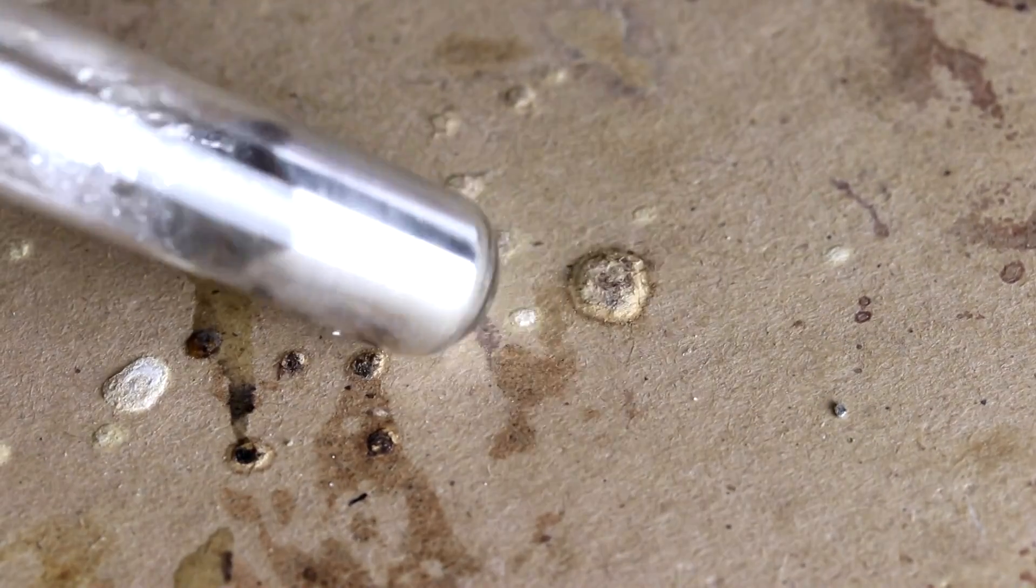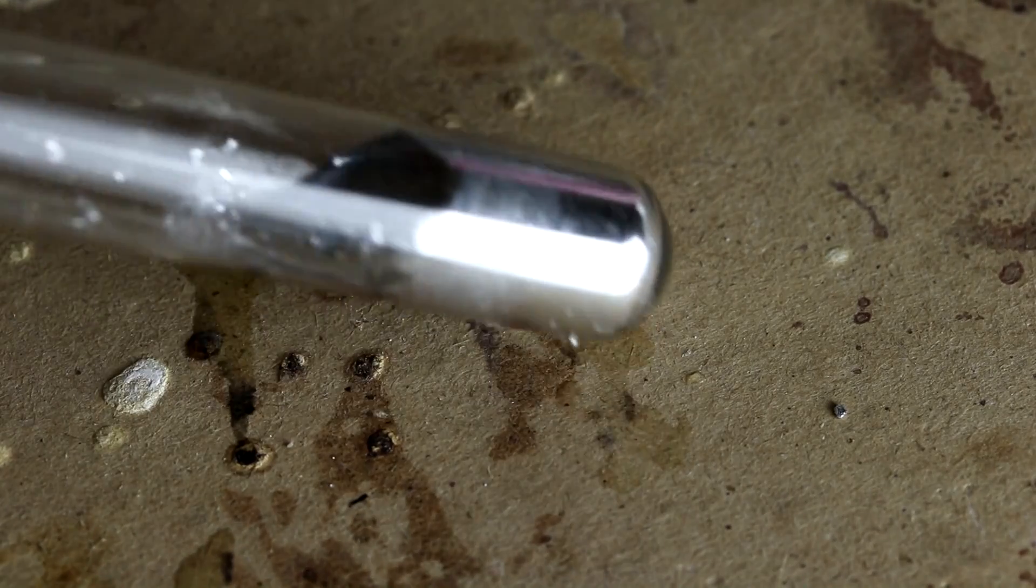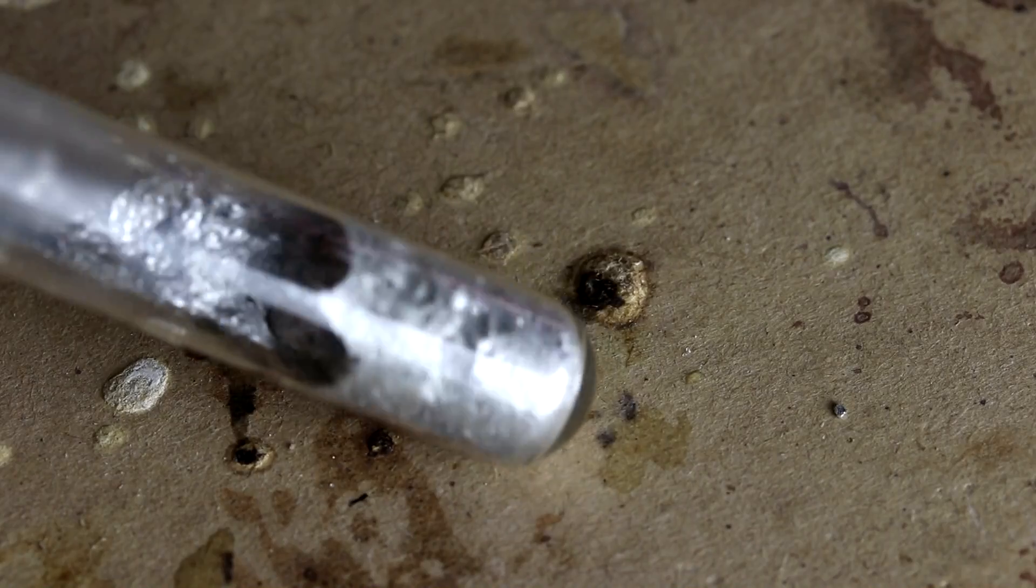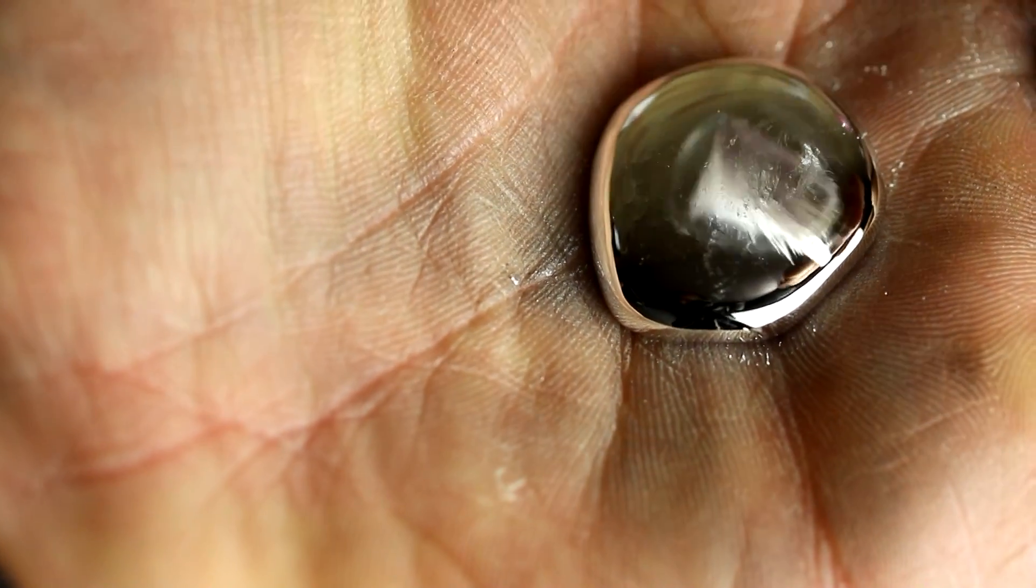So now I've transferred the alloy into a test tube here. There's still some chunks of other metal, tin and indium in there. So I'm going to warm this up to get it to dissolve a little faster, basically melt the metals together. So now that this metal has cooled off, it's safe for me to pour it out onto my hand. There we are, some liquid metal.